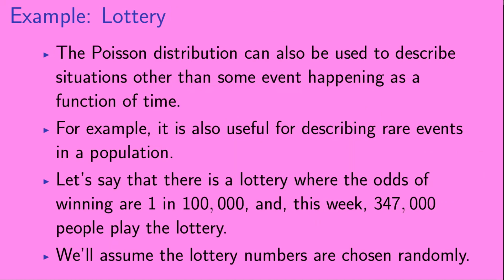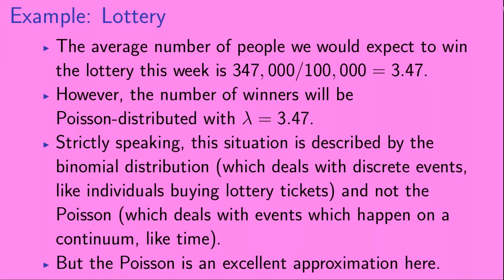The Poisson distribution can also describe situations other than events happening as a function of time — it's also useful for describing rare events in a population. Let's say there is a lottery where the odds of winning are 1 in 100,000, and this week 347,000 people play. The average number of winners would be 347,000 / 100,000 = 3.47. The number of winners will be Poisson distributed with λ = 3.47. Strictly speaking, this situation is described by the binomial distribution, but the Poisson distribution is an excellent approximation here.